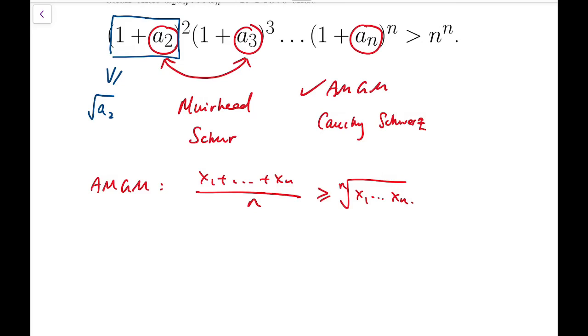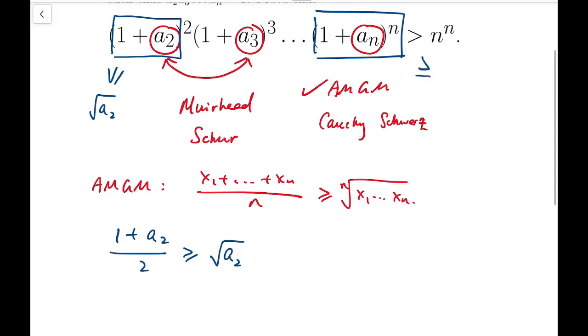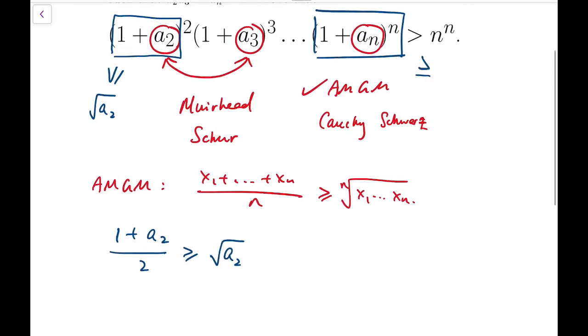This is simple because we can simply say (1+a₂)/2 is greater than or equal to square root of a₂. What about the others? Say (1+aₙ) to the whole thing to the n. In this case, we aim to have something greater than or equal to something in terms of the nth root of aₙ, so that when we bring the whole thing to the power n, we can achieve aₙ.